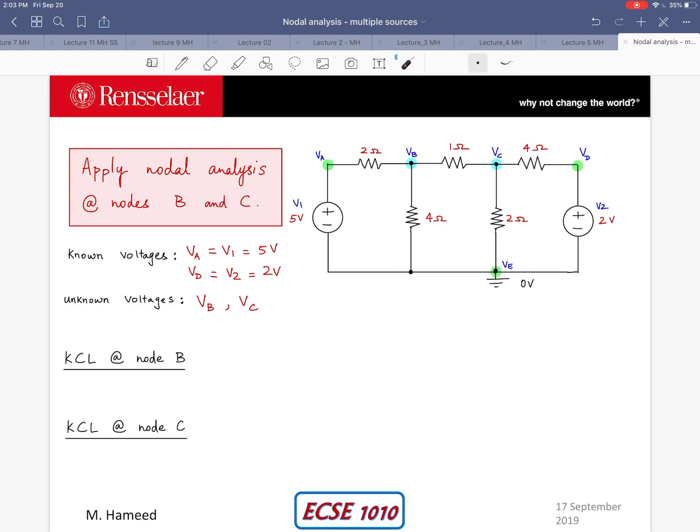And this is going to be very similar to what we have seen for examples in which we had one source. So if we apply a nodal equation, KCL equation at node B, we would say the current going out in this direction plus that plus that equals 0.